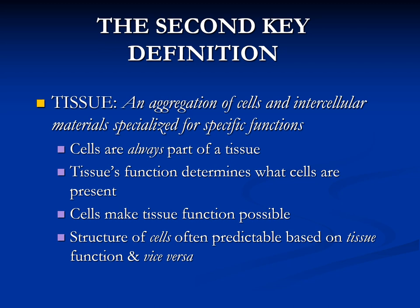Depending on the tissue, we have certain types of cells. The structure of the cells often predicts the tissue function and vice versa. For muscle, we need cells that have actin and myosin so they can contract. For connective tissue or the epithelium, we don't need cells that have actin and myosin, because these cells are not specialized for contraction.